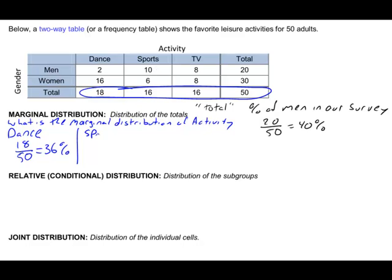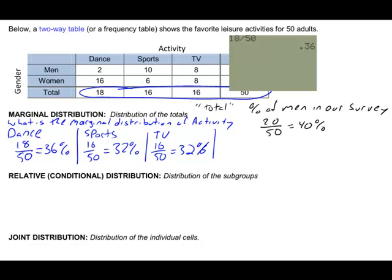For sports, it's going to be 16 out of 50, which if you do the math, is going to be 32%. And lastly, I have TV, which again is 16 out of 50, which gives me 32%. And there's my marginal distribution of activity. We can double check that by adding up all the percentages. We have 36 plus 32 plus 32. Gives me 100%, and that makes sense. I have 100% of the people did either dance, sports, or TV. Sometimes if you have rounded, it might be a little bit less or a little bit more than 100. That's okay. Note that you rounded.